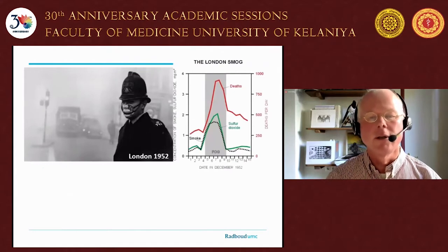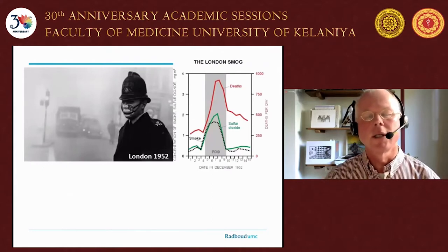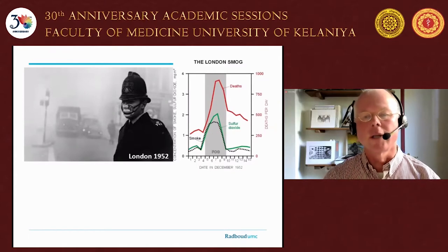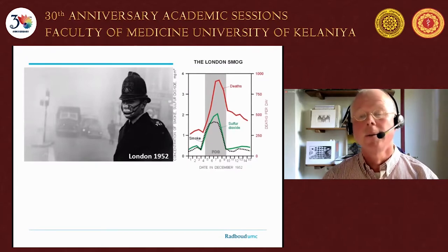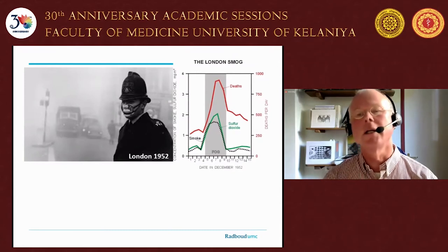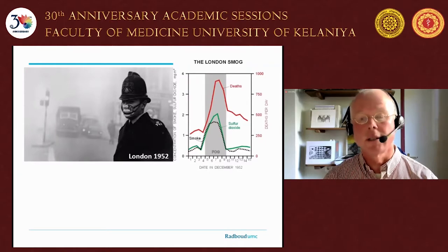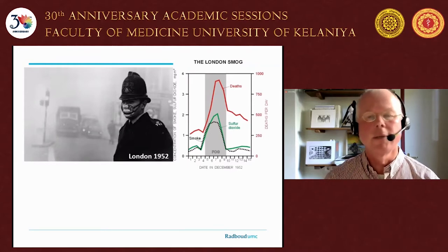In Europe, the London Smog episode of 1952 was a very interesting event that showed that at that time air quality had a large impact on mortality — acute mortality. In a couple of days during that episode there was a considerable increase in mortality, which was most probably the result of both particles and sulfur dioxide, a substance produced when using coal for home heating.